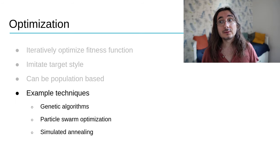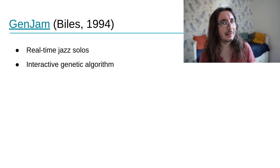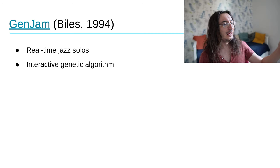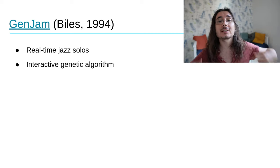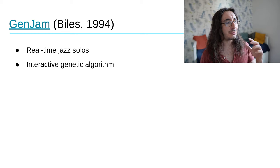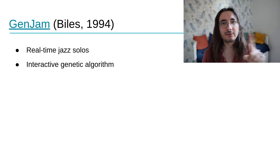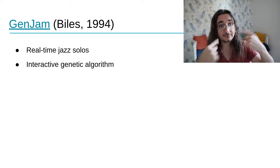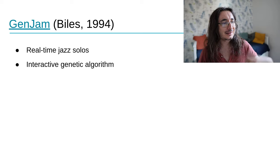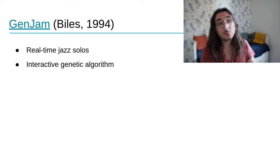In part two of the course we'll get into genetic algorithms in detail. For now, an example: GenJam — you can guess it uses genetic algorithms. Presented by Biles in 1994, it generates real-time jazz solos on top of accompaniment using an interactive genetic algorithm. Interactive means you, as a human, become the fitness function: the system generates solutions, you listen and give feedback, and the system learns from your preferences to adapt the next generation of solutions based on what you like or don't like.